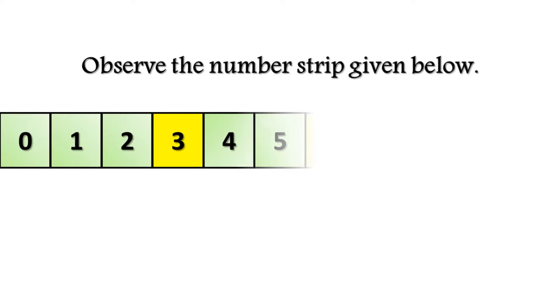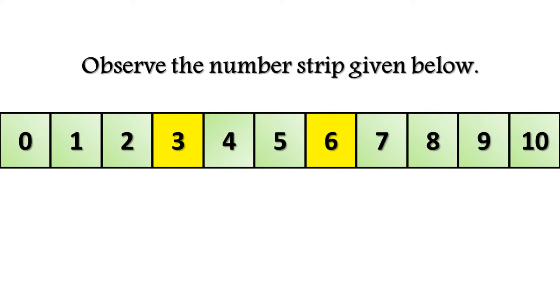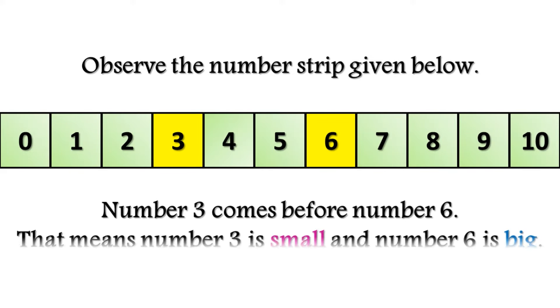Observe the number strip given below. Number 3 comes before number 6. That means number 3 is small and number 6 is big.